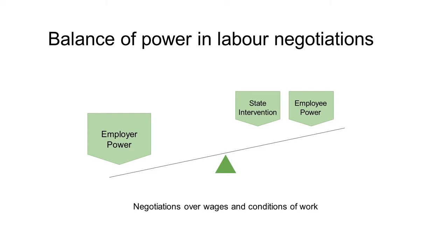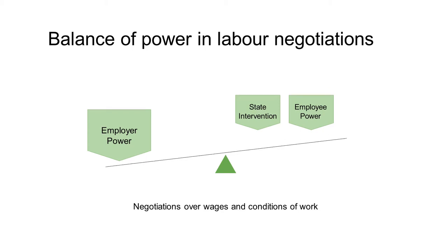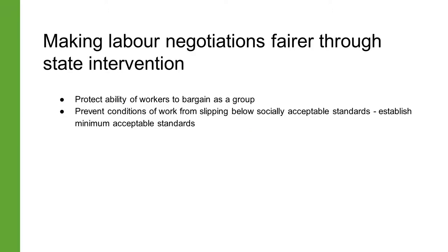The state intervenes in the labor market through labor law to prevent wages and conditions of work from being pushed below levels that are considered acceptable. Labor law contains rules that protect the ability of workers to organize and bargain collectively, and sets out minimum standards for various aspects of work such as wages, working time, health and safety, workplace facilities, and social security.